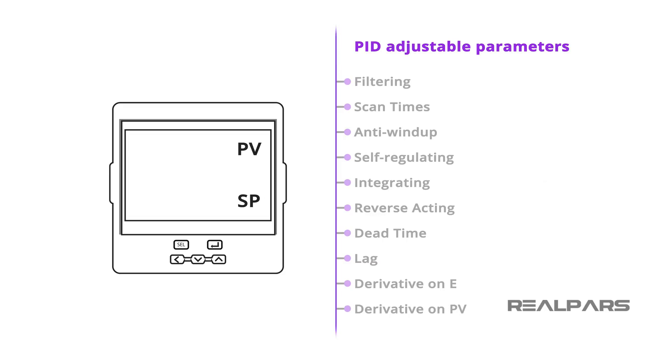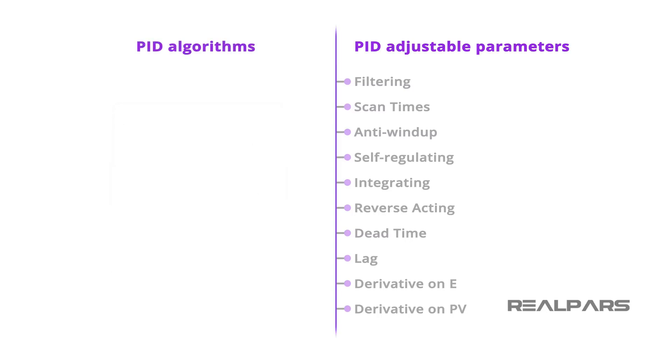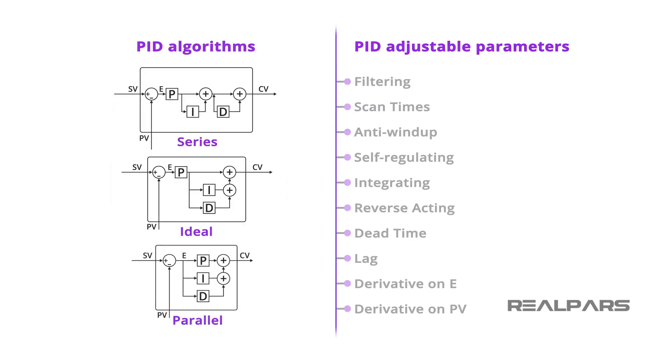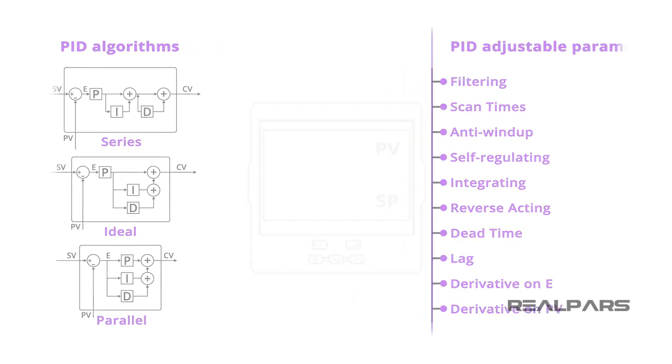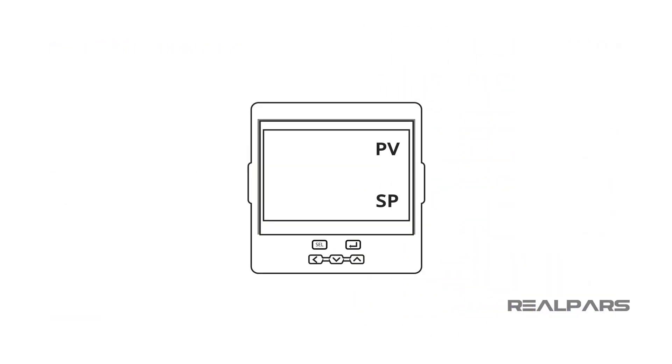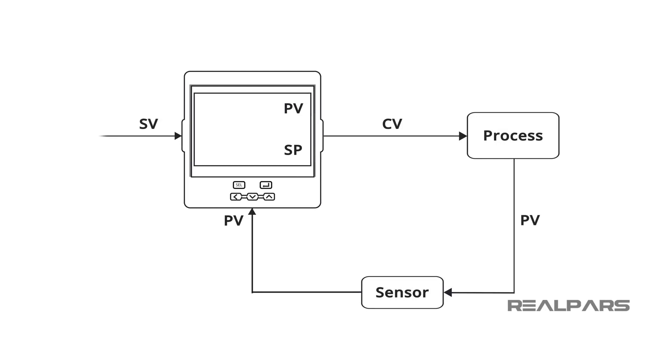Other parameters to research for PID controllers are series, ideal and parallel algorithms, filtering, scan times, anti-wind-up, self-regulating versus integrating processes, reverse acting, dead time, lag, derivative on E, or derivative on PV, just to mention a few. Because of the inherent difficulty in tuning the most basic of PID loops, these parameters, which are more advanced than this basic tutorial, are better left for future lessons or self-exploration.